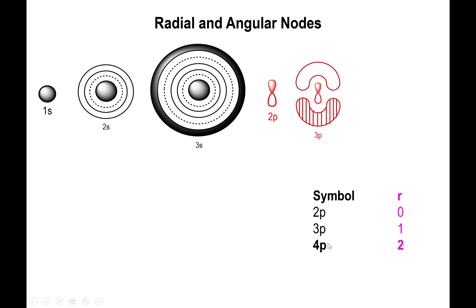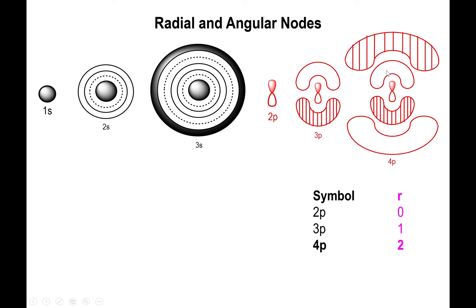For the 4p orbital with two radial nodes, you draw one macaroni and then another macaroni for each lobe — so two macaronis per lobe. The shading alternates with each macaroni: the original lobe is shaded, the first macaroni is unshaded, and the second macaroni is shaded again. The same alternating pattern applies to the lower lobe.